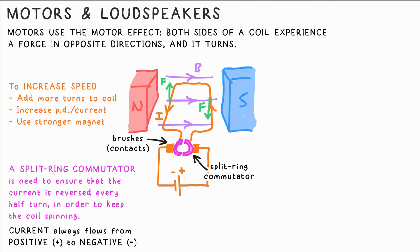To make a motor turn faster you can increase the current, use a stronger magnet, or add more turns to the coil so there's a greater length of wire ultimately experiencing the force.